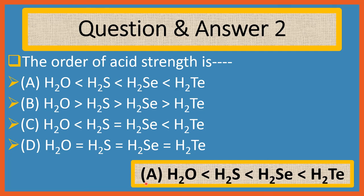Answer is A: H2O less than H2S less than H2Se less than H2Te. Along a group, acidity of hydrides increases as one passes downward. The size of the central atom increases rapidly downwards, and as the atom becomes larger, bonding with the small hydrogen atom becomes weaker. Therefore, the acidity increases in the order H2O less than H2S less than H2Se less than H2Te.